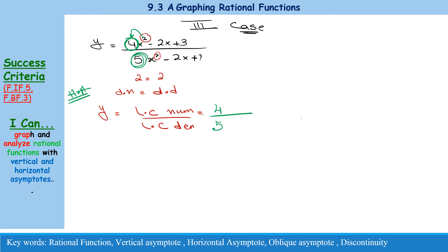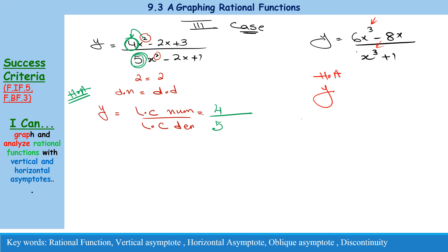The leading coefficient of the numerator is 4 (the coefficient of x squared), and the leading coefficient of the denominator is 5. So the horizontal asymptote is y equals 4 over 5. For another example: 6x cubed minus 8x over x cubed plus 1 — both degrees are 3, so the horizontal asymptote is y equals 6 over 1, which is 6.